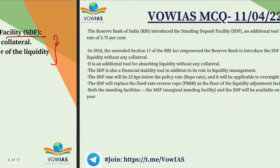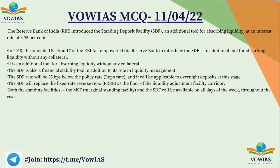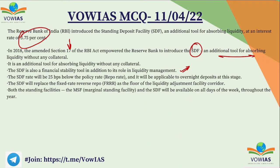Recently, the Reserve Bank of India introduced the Standing Deposit Facility, an additional tool for absorbing liquidity at an interest rate of 3.75%. In 2018, the amendment to Section 17 of the RBI Act empowered the RBI to introduce SDF — an additional tool for absorbing excess liquidity without any collateral, helping to stabilize the financial sector and aid liquidity management. The SDF rate will be 25 basis points below the policy repo rate, applicable to overnight deposits. SDF will replace the fixed rate reverse repo as the floor of the liquidity adjustment facility corridor, and both the MSF and SDF will be available on all days of the week throughout the year.